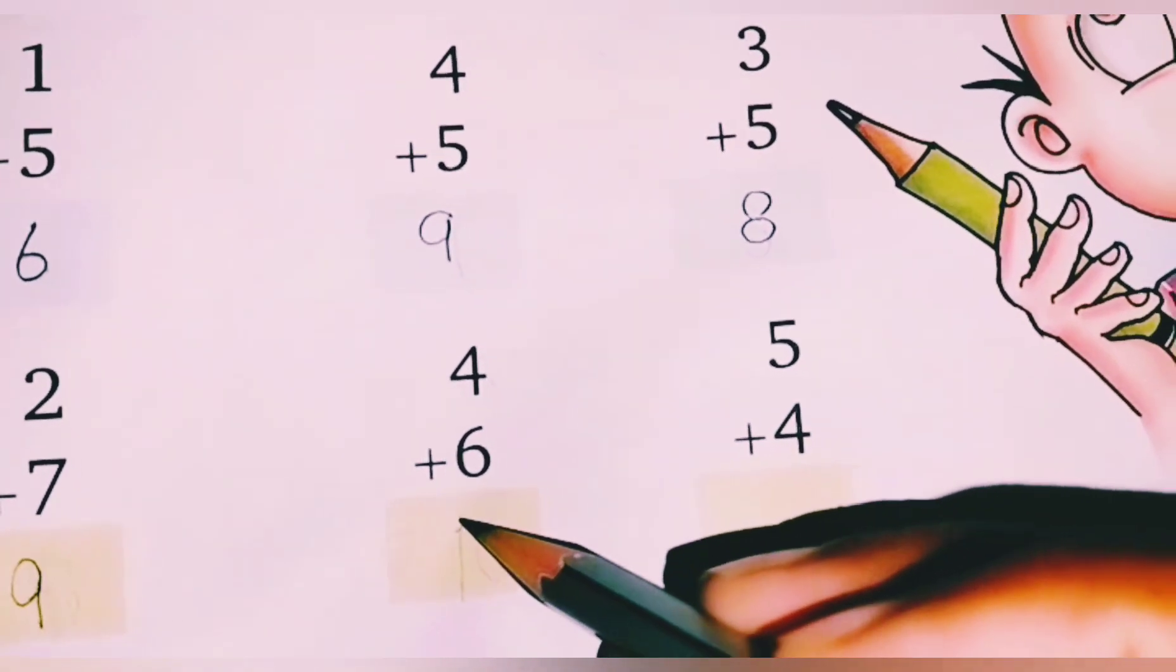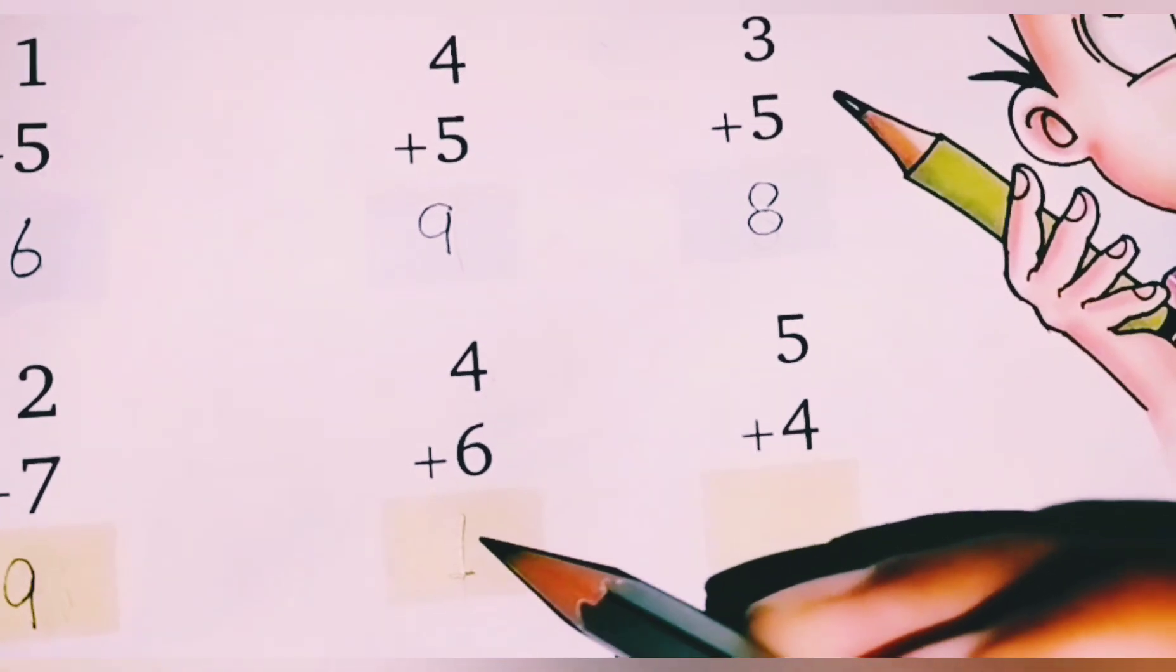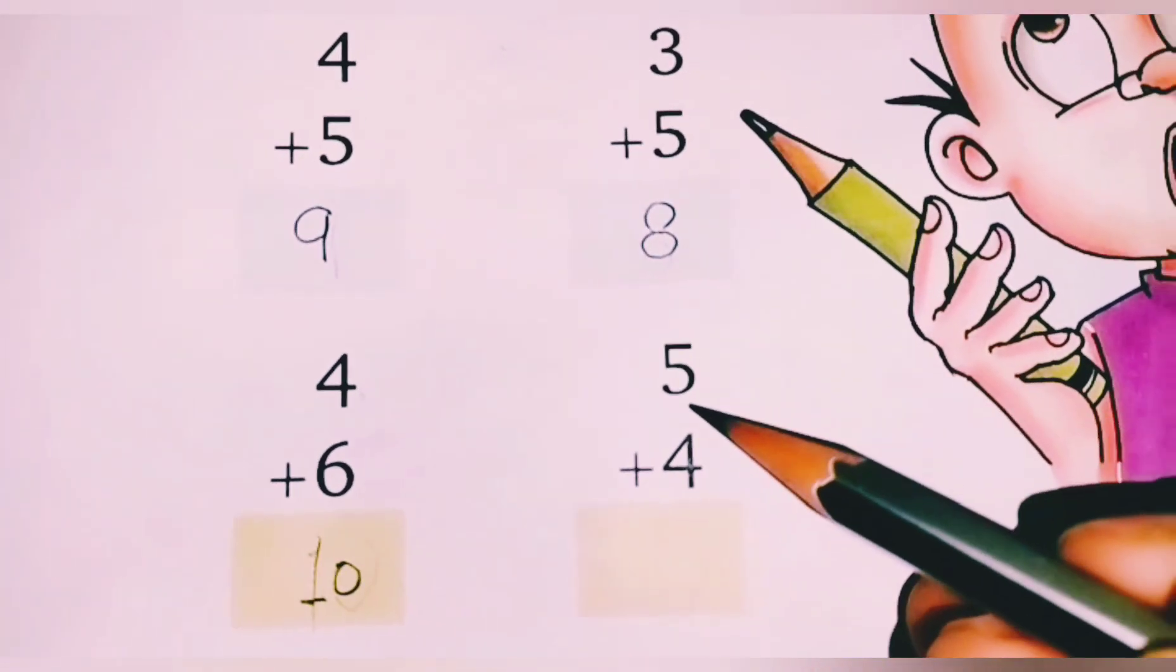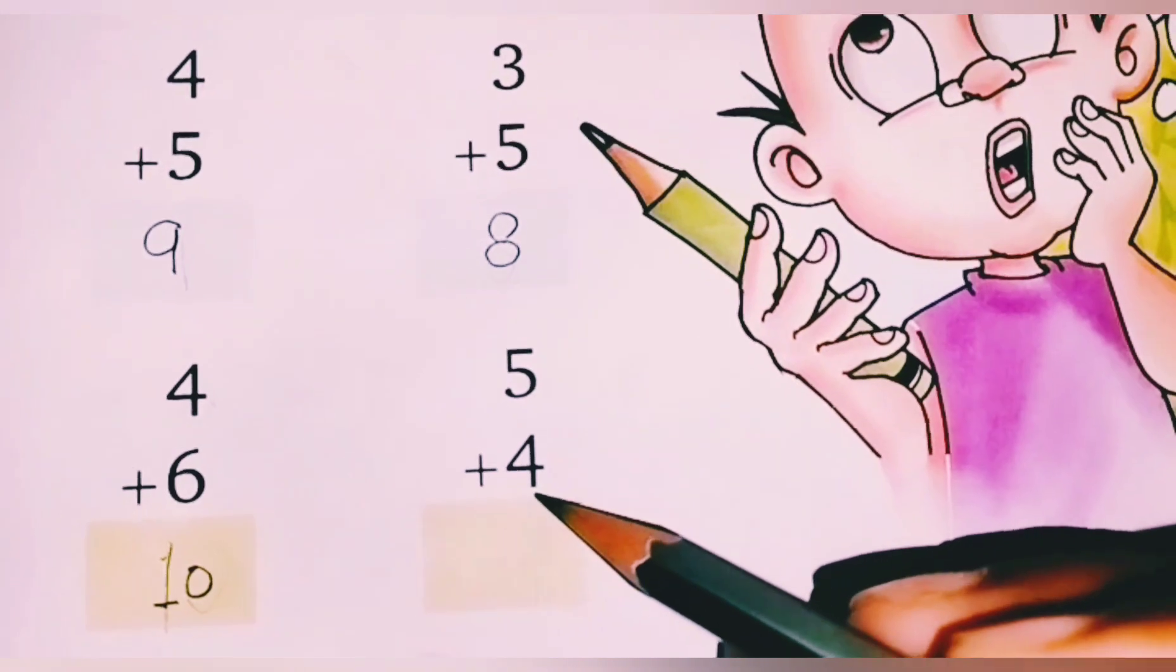4 plus 6 is 9. 4 plus 6 is 10. Ten. Okay, then the next number is 5, which number is 4.